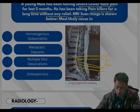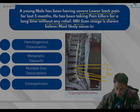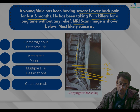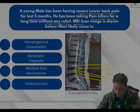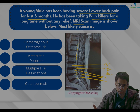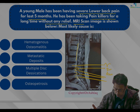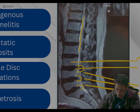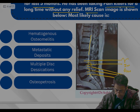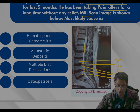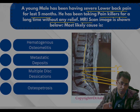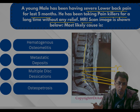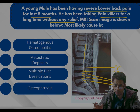Hematogenous osteomyelitis would not present in a similar manner for five months — it is not acute hematogenous osteomyelitis. Metastatic deposits cannot be seen in the figure; the vertebrae are characteristically fine, so there is nothing much in the vertebrae. Osteopetrosis — Albert Schönberg's marble bone disease — would present differently, with bones appearing more white due to the osteopathic element. So this is not osteopetrosis.